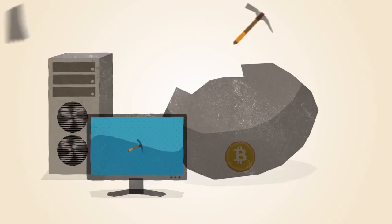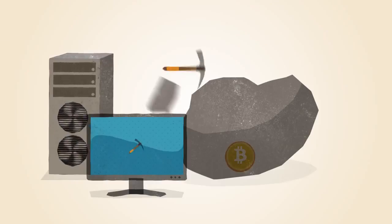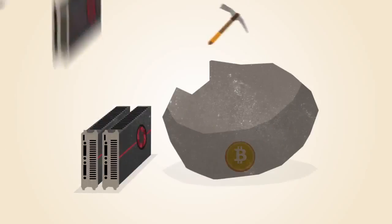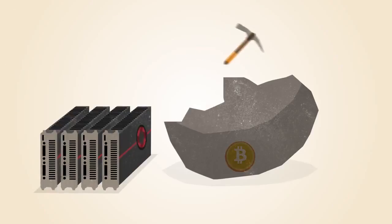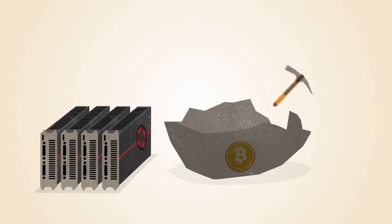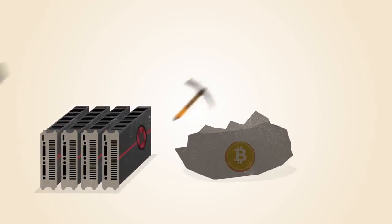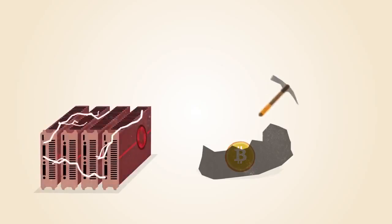In the early days, Bitcoin miners solved these math problems with the processors in their computers. Soon, miners discovered that graphics cards used for gaming were much better suited to this kind of math. Graphics cards are faster, but they use more electricity and generate a lot of heat.